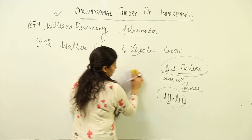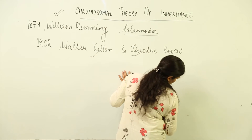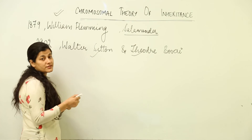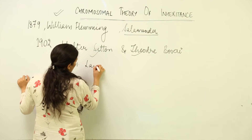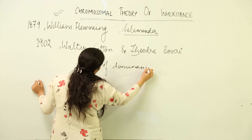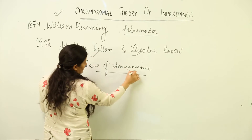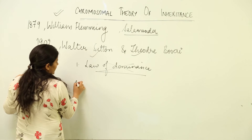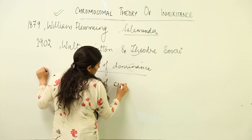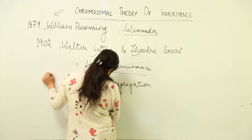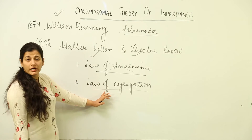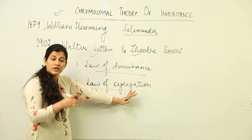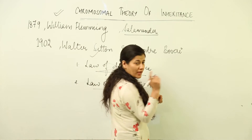Now we will see the parallel between the chromosomal theory and Mendel's three laws. First, the law of dominance has no standing in the chromosomal theory of inheritance — it has nothing to do with it. Second, the law of segregation: because meiosis targets germ cells, the chromosome number must be reduced to half, so genes and their alleles get segregated.